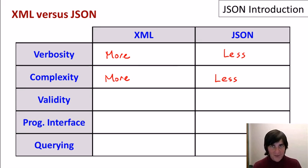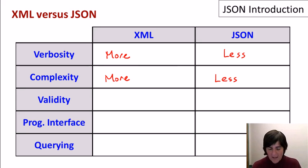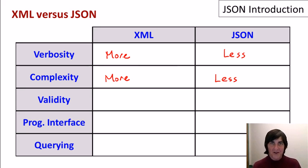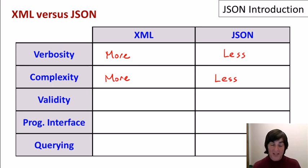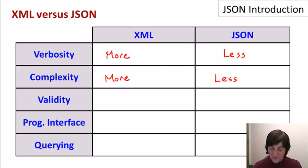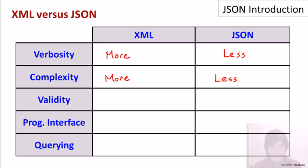If you look at JSON, you've got your basic values and you've got your objects and your arrays. I think the issue is that XML has a lot of extra stuff that goes along with it. So if you read the entire XML specification, it'll take you a long time. JSON — you can grasp the entire specification a little bit more quickly.